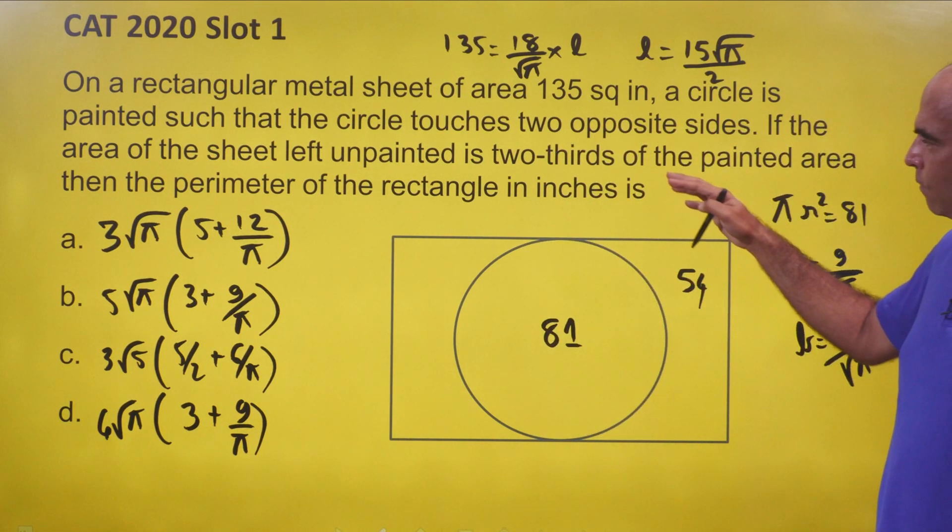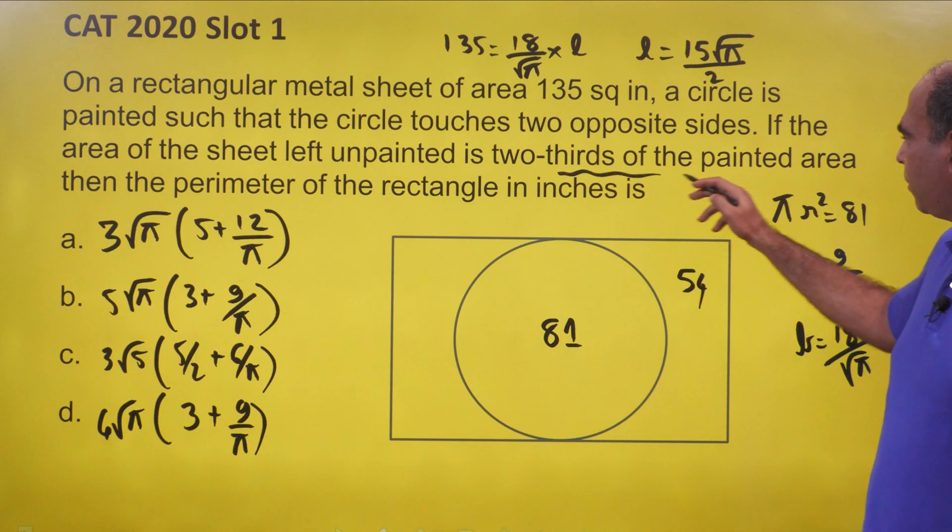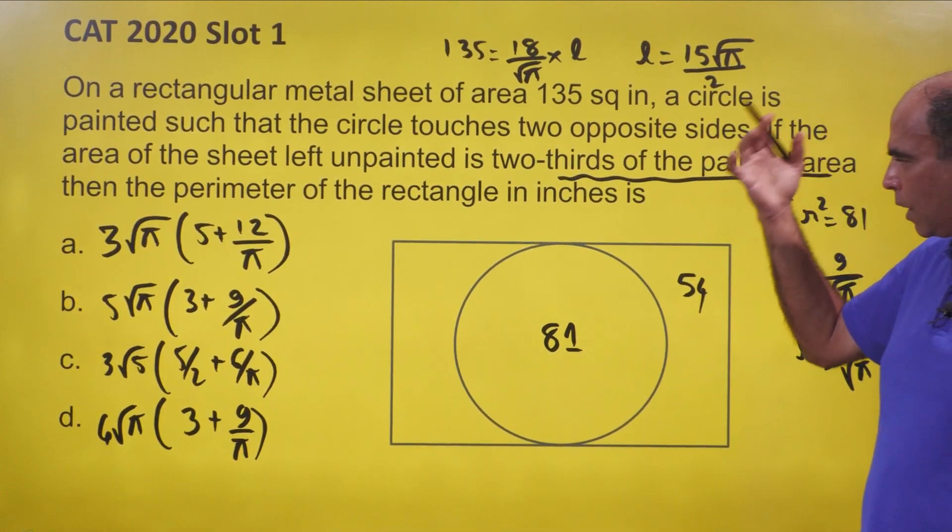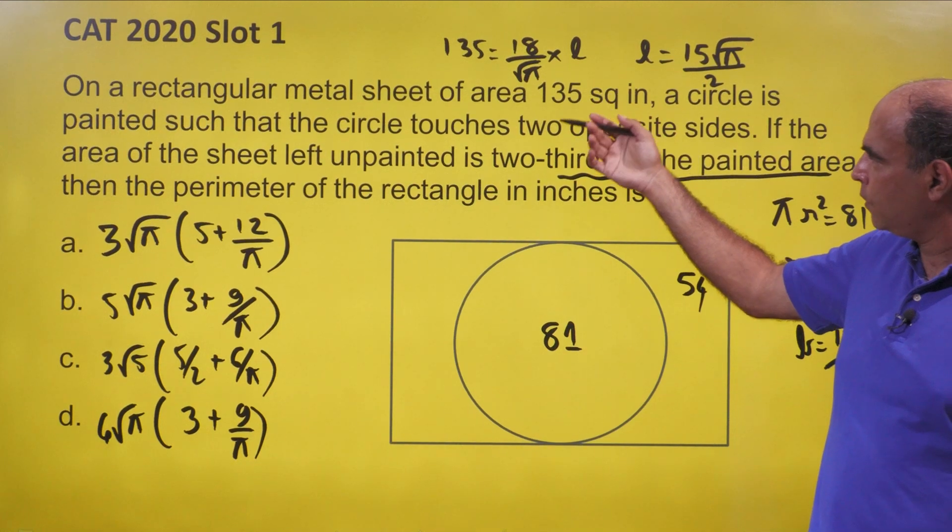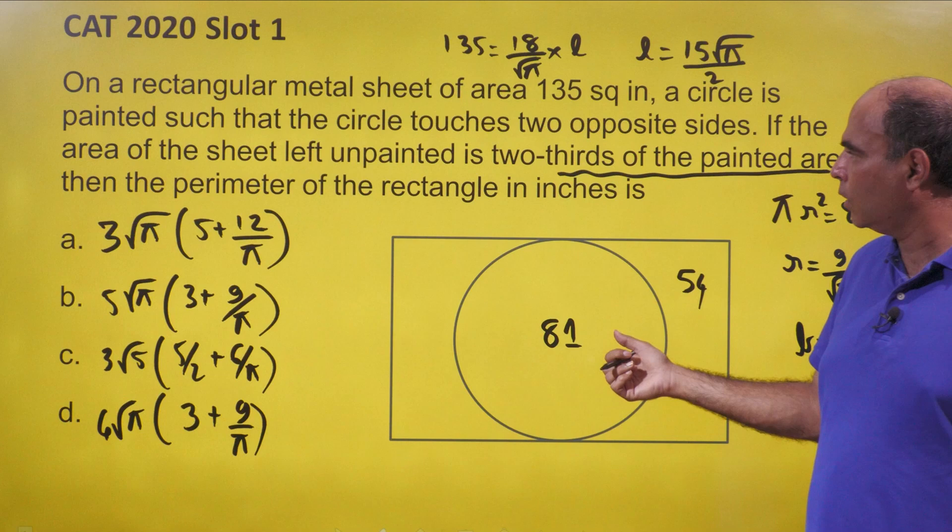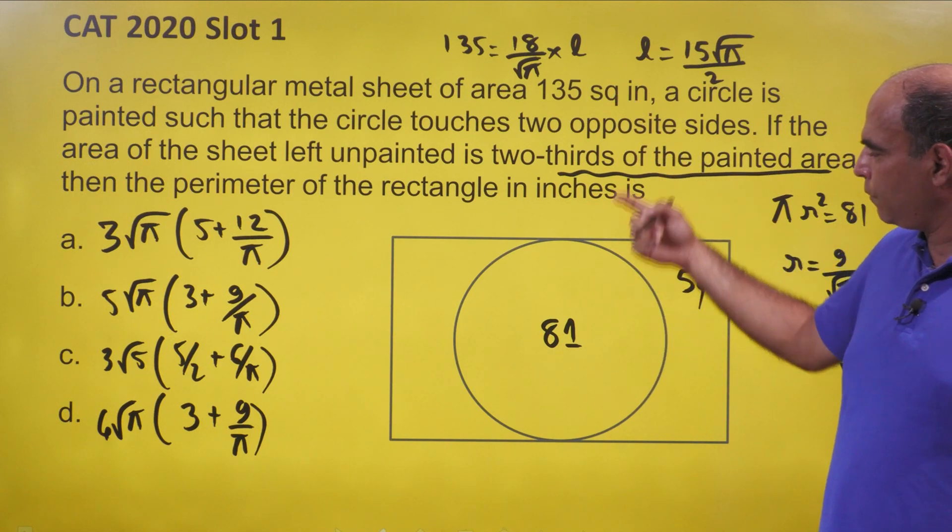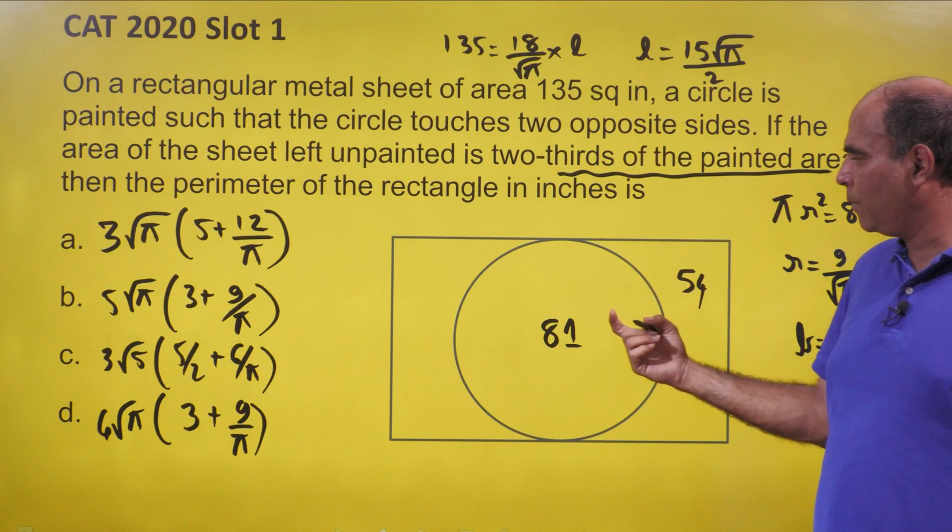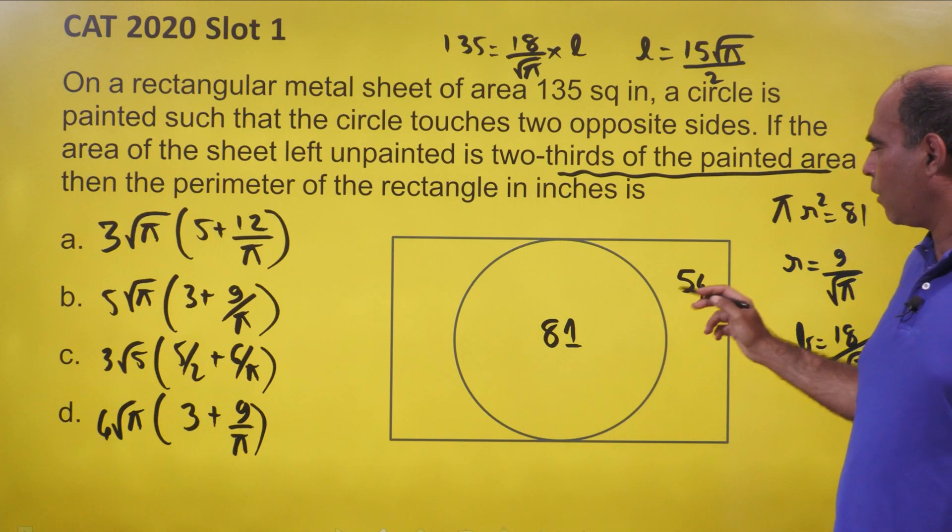This is the picture. The area of the sheet left unpainted is two-thirds of the painted area. This should give you the reaction that if I split this area in five parts, two parts is outside and three parts is on the circle, which basically means that 135 split in three-to-two will give me the area of the circle is 81 and outside is 54.